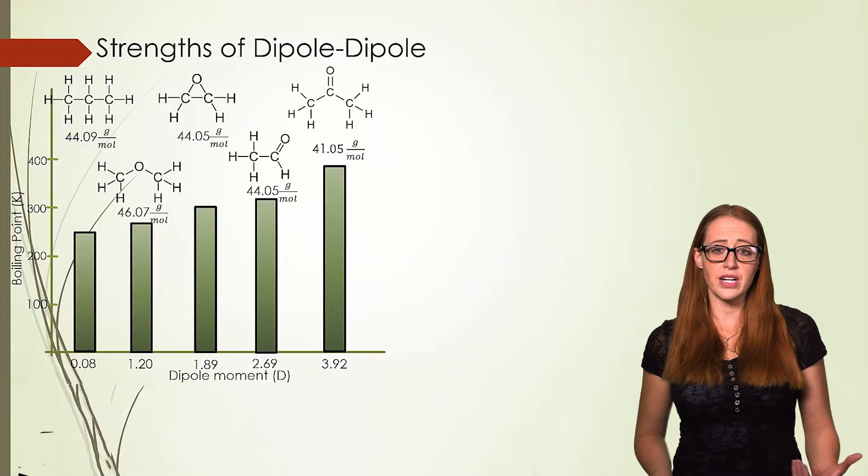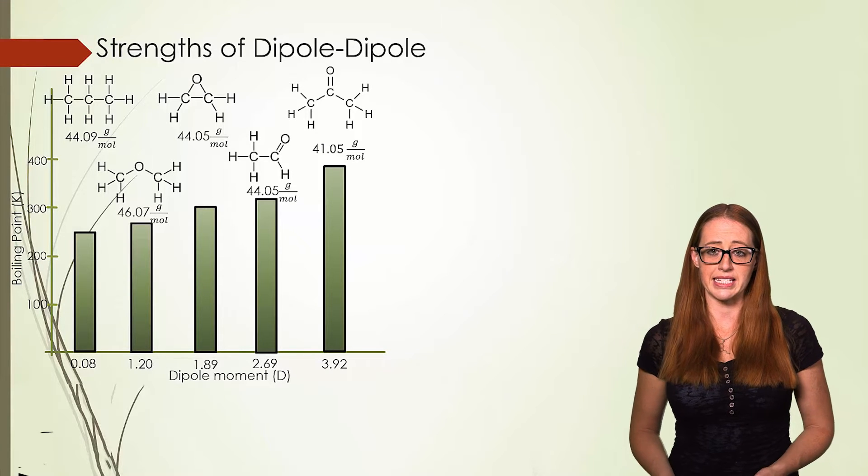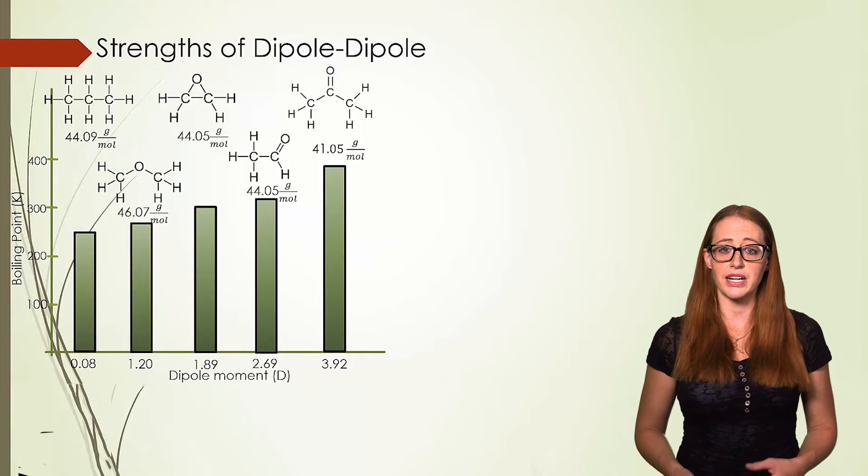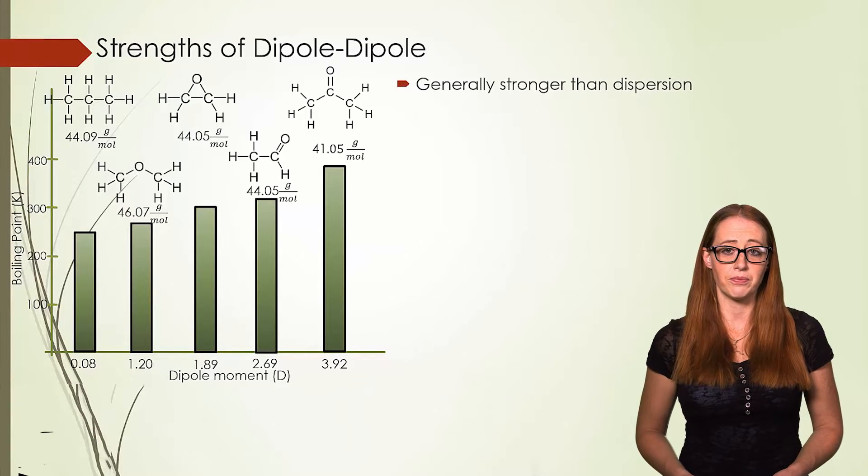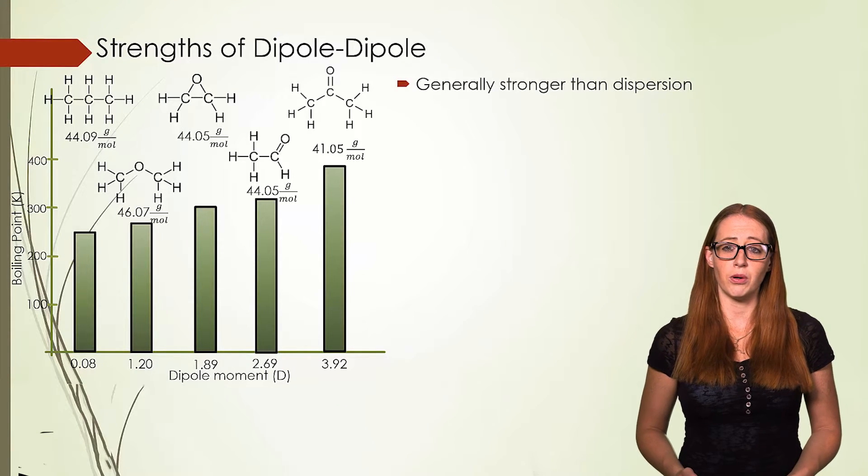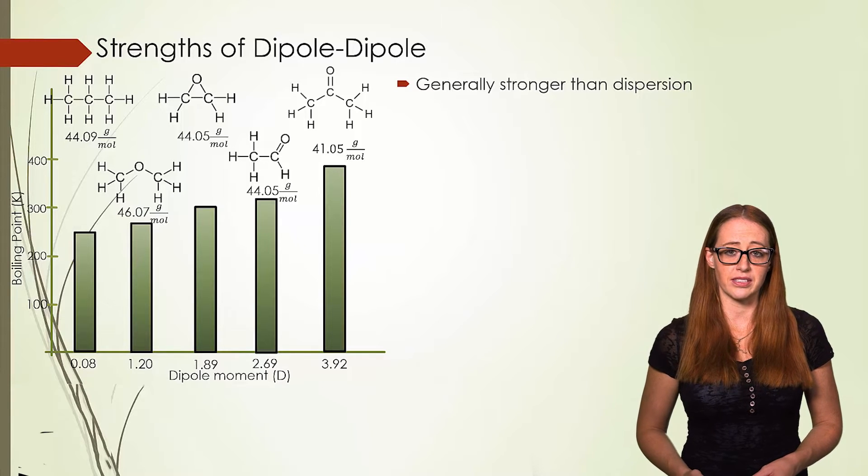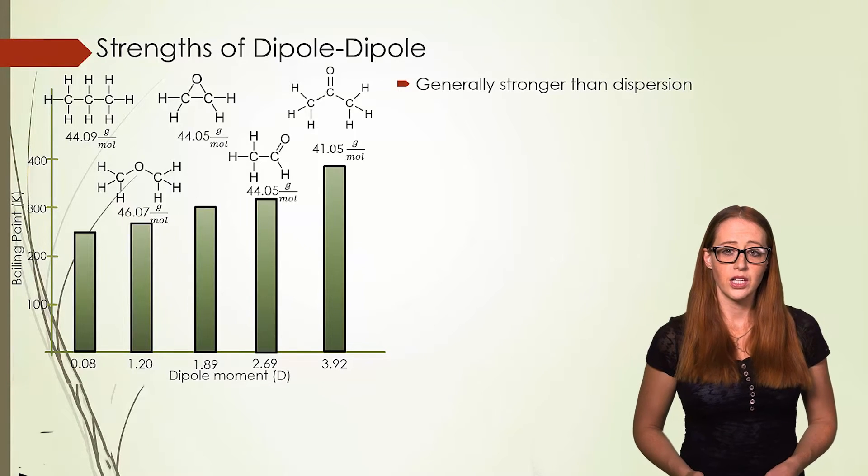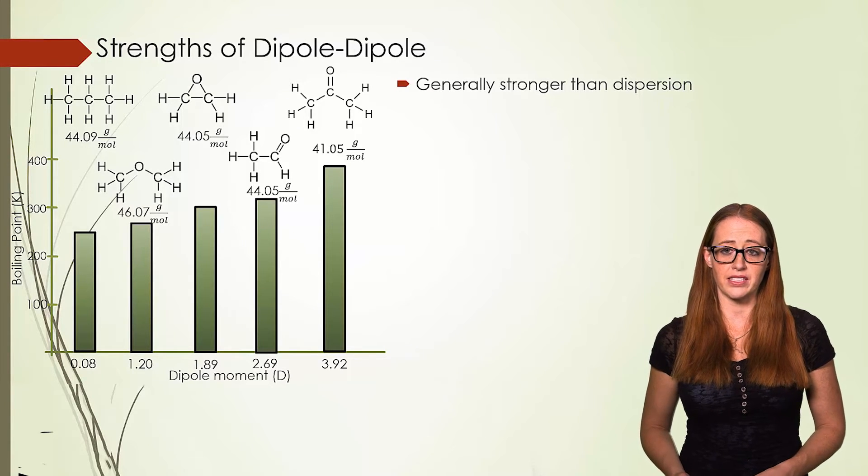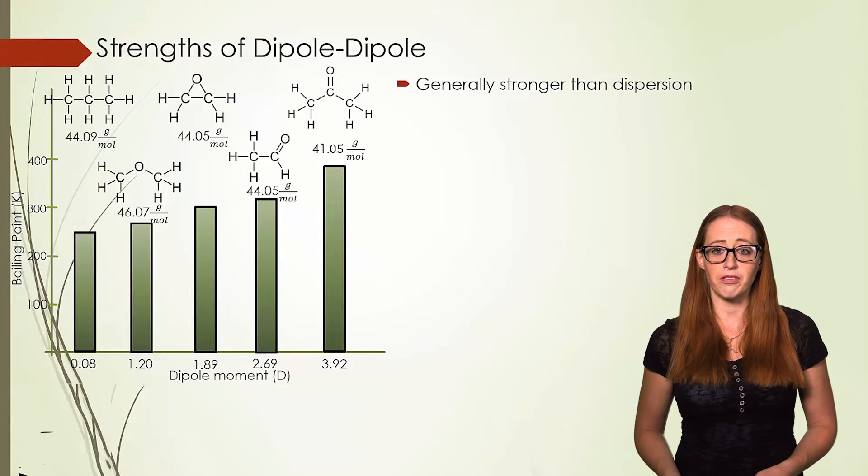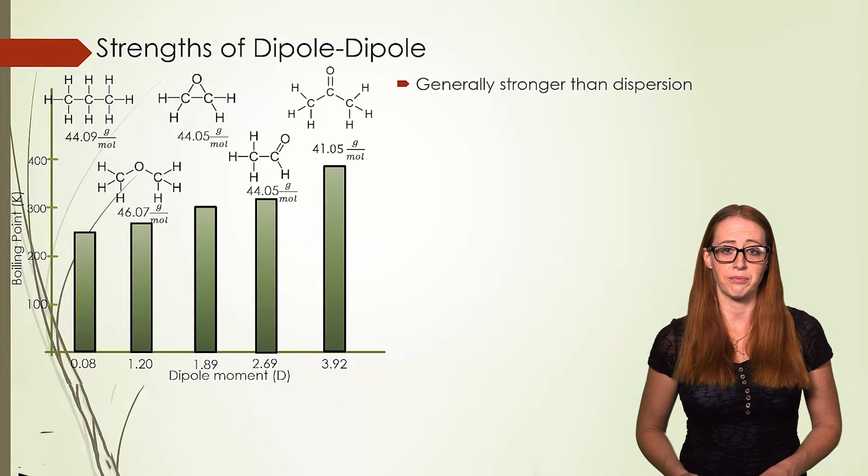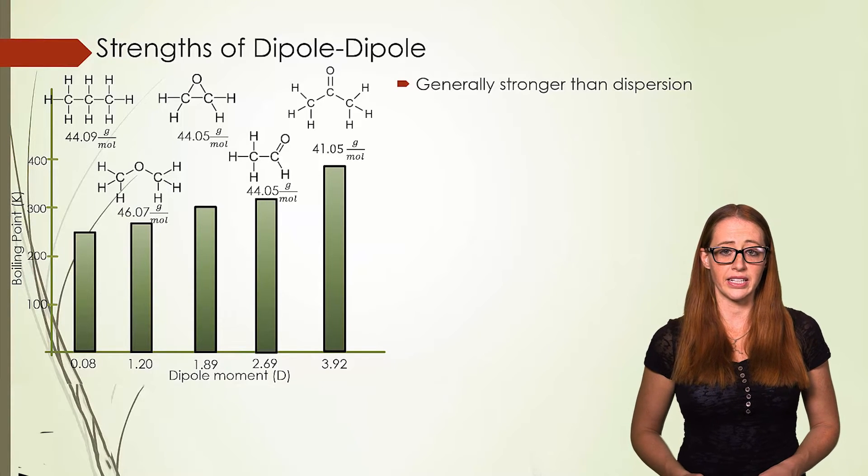Now dipoles are not simply a yes or no identity. There are some molecules which have a very strong dipole, and others which have a very small dipole. The stronger the dipole, the more intermolecular forces the species will have. We'll talk specifically about the effects of intermolecular forces on boiling point in a minute, but as mentioned before, the more IMFs the higher the boiling point, and that is illustrated well here.